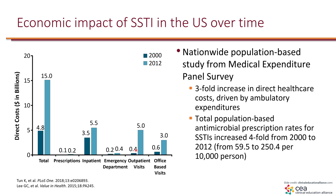Looking at the period from 2000 to 2012, there was a threefold increase in direct healthcare costs driven by ambulatory care expenditure. The total population-based antimicrobial prescription rates for SSTIs increased fourfold from 2000 to 2012.